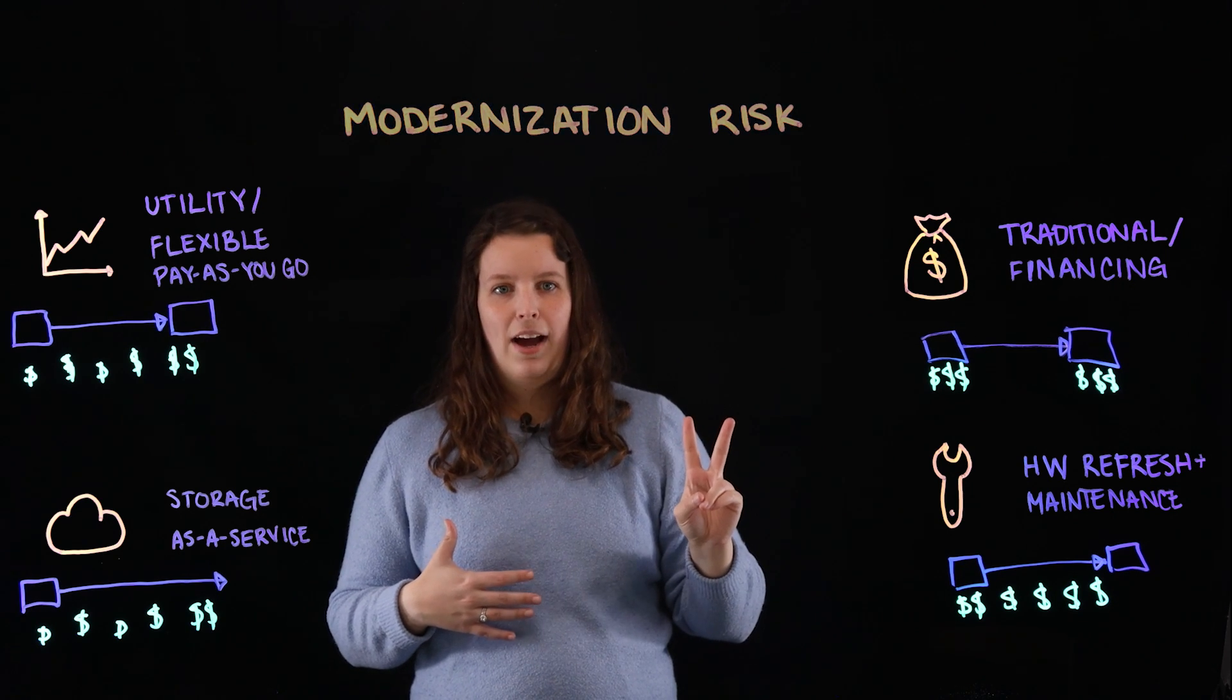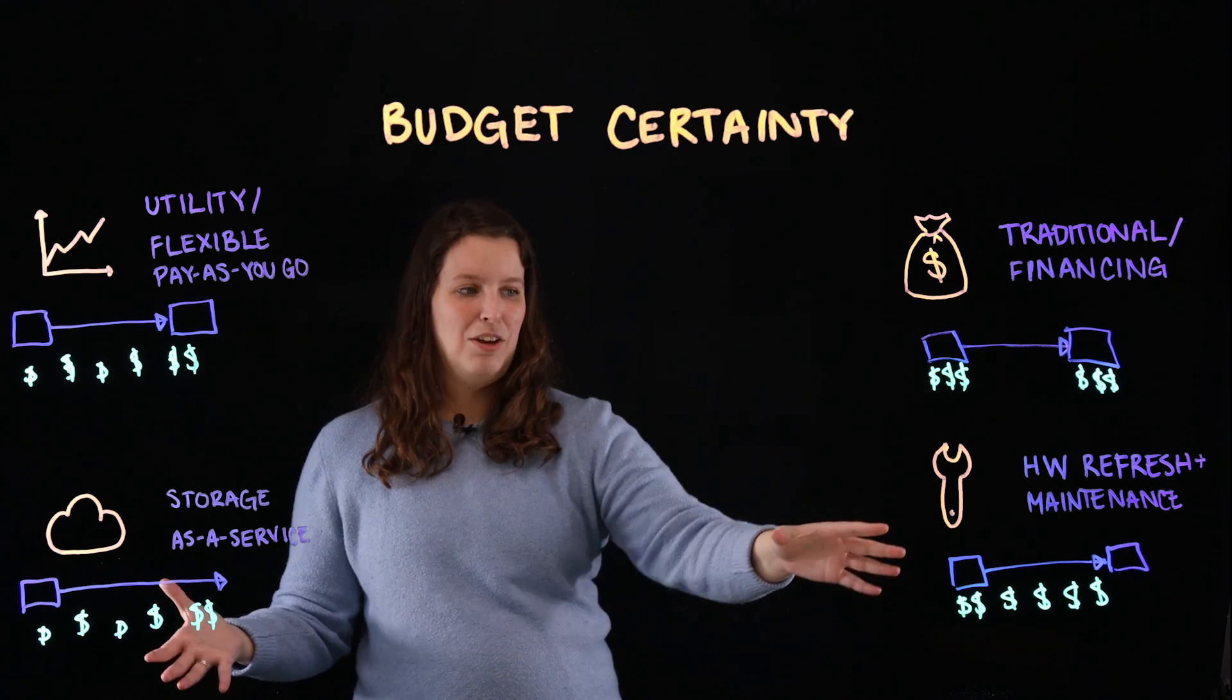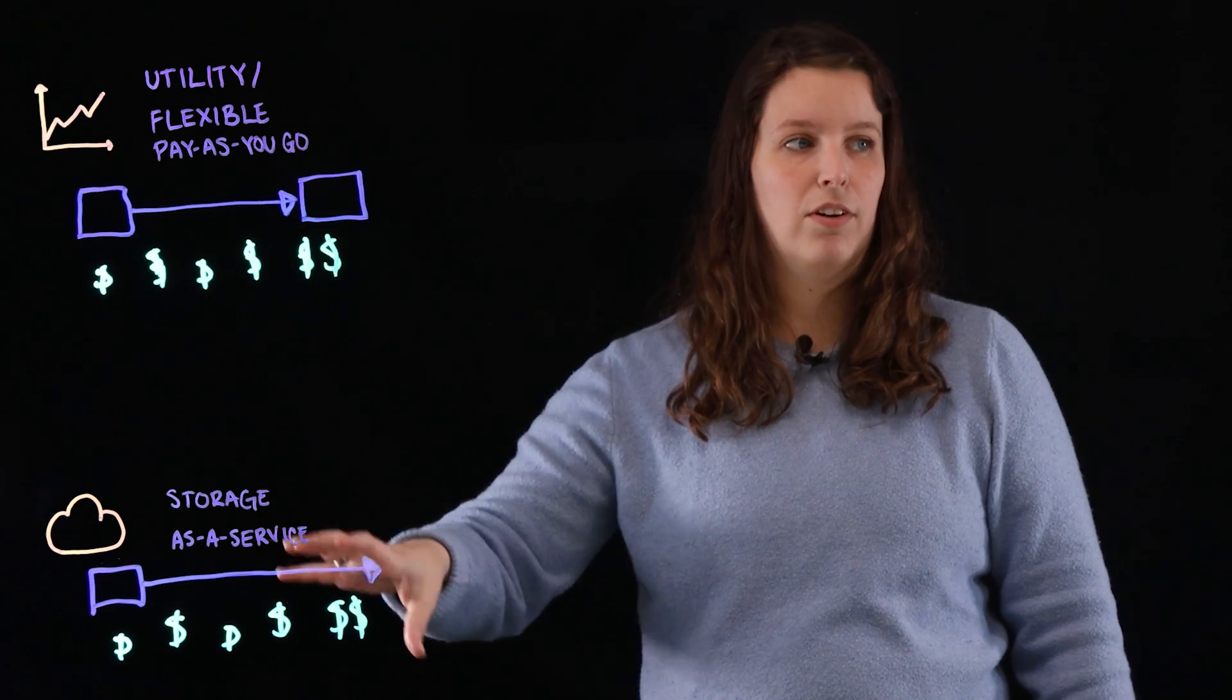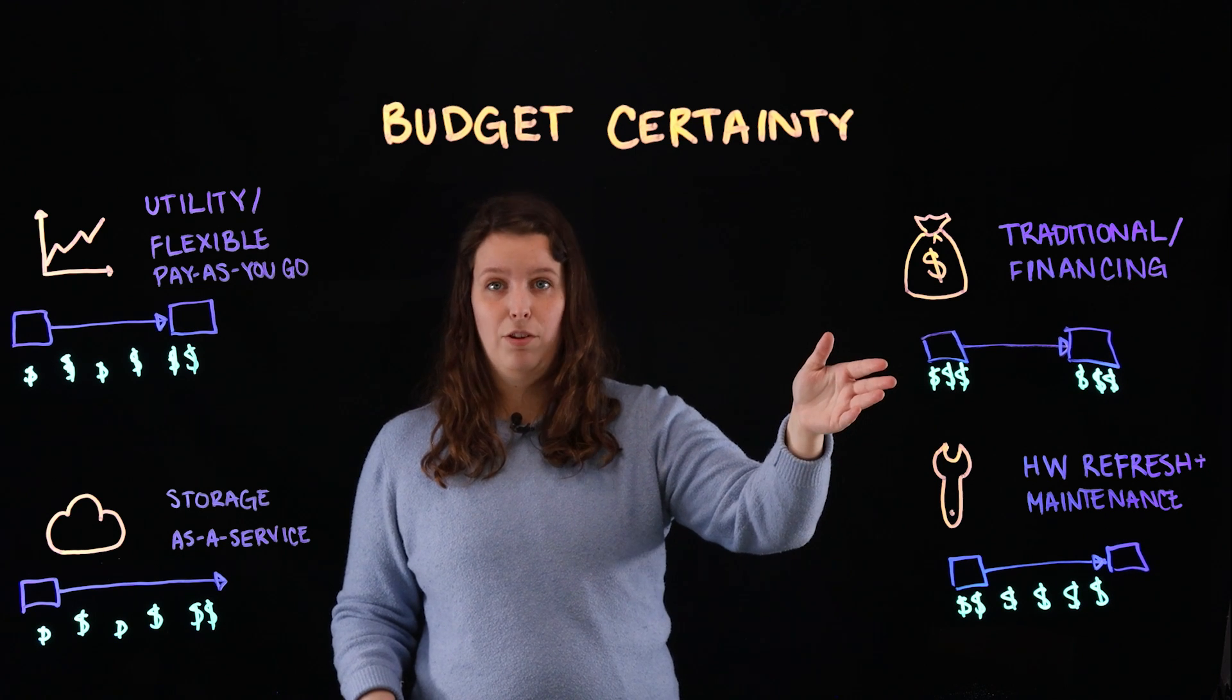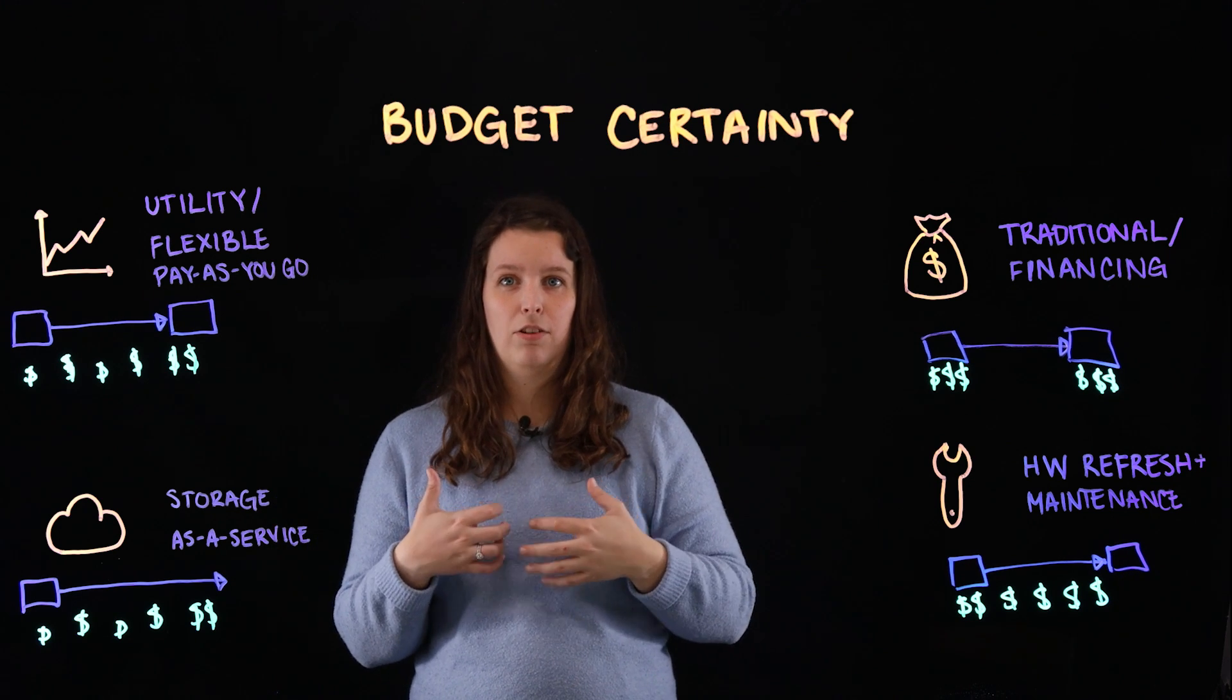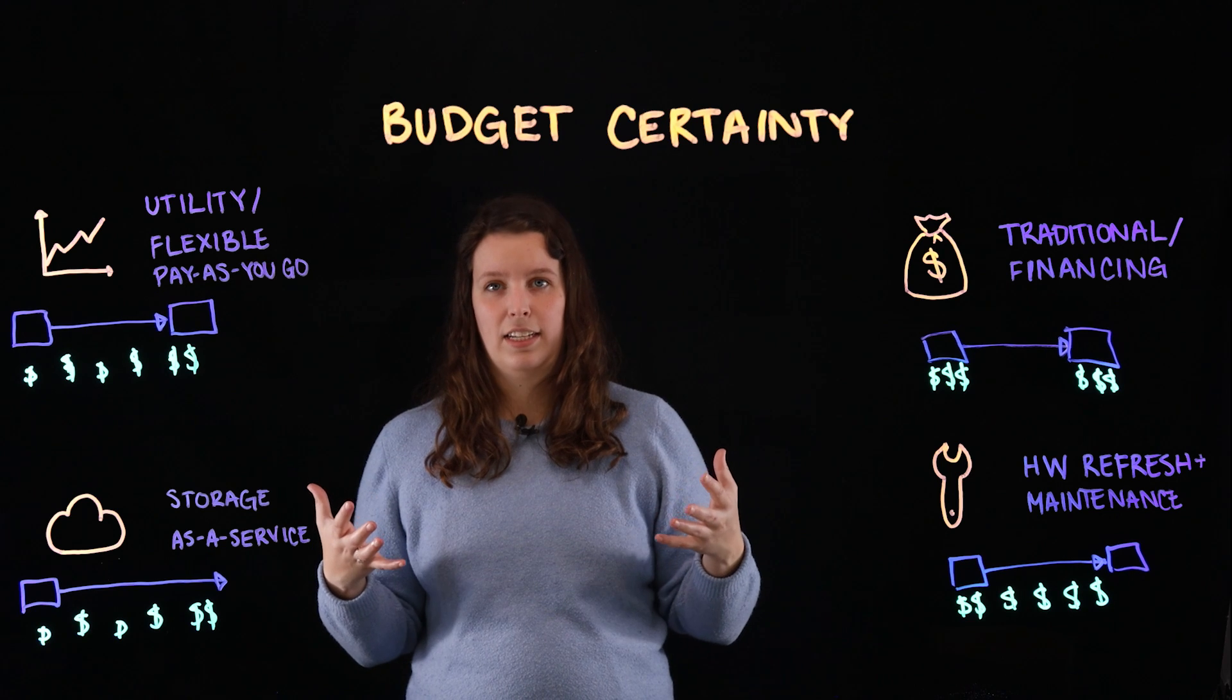The second key factor to consider is budget certainty. The dollar signs kind of show that, but you can see there's flat rate guarantees on some of these, whereas some of these your costs could balloon over time or your costs could be dependent on whenever you refresh. So you have to ask for budget approval every time you want to modernize your equipment. There's tension between those two. So you need to decide what's most important for your use case as a company.